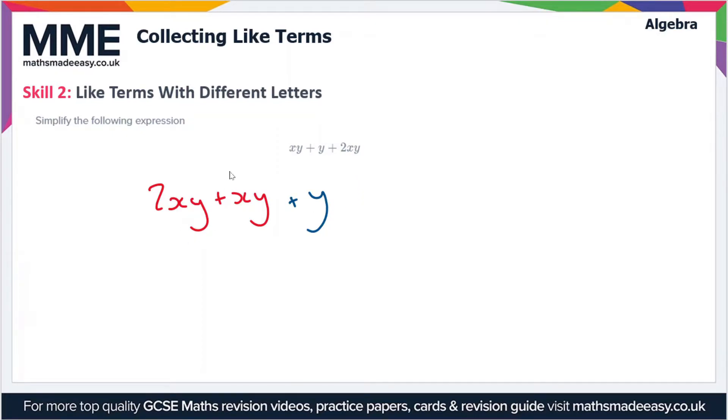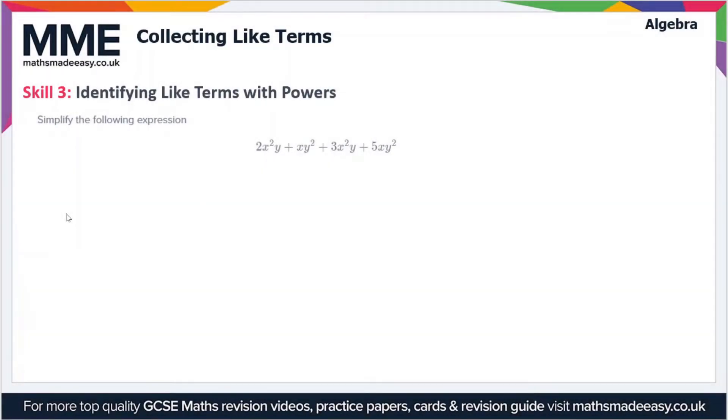To simplify this expression, we just add the terms in xy together, which gives us 3xy plus y. So that is the simplified form of the expression. So moving on to a more complicated example now.